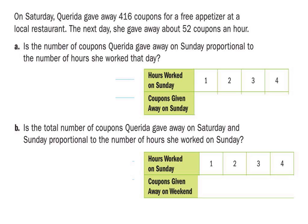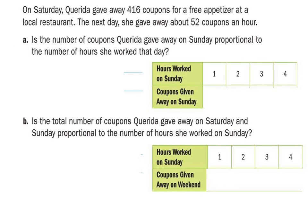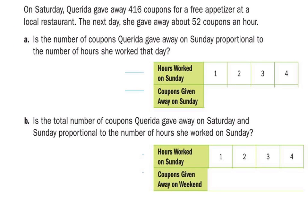So on Saturday, Querida gave away 416 coupons for a free appetizer at a local restaurant. The next day, she gave away about 52 coupons every hour. So, based on this, 52 coupons an hour, is this going to be proportional? No. Well, let me ask you this. At zero hours, how many coupons did she give away? There was no fee. Very good. At zero hours, how many coupons did she give away? Zero. That alone will tell you that it is proportional.